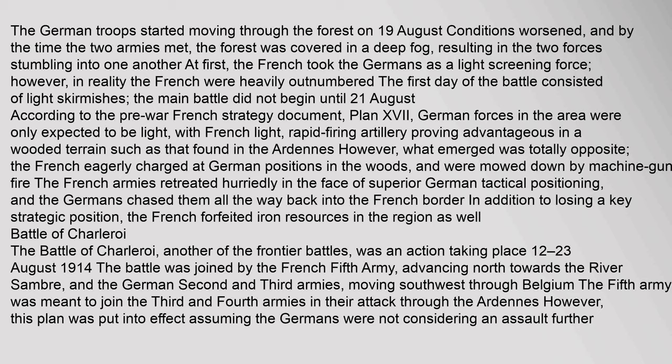General Pierre Ruffey's 3rd Army to the south and Fernand de L'Angle de Carrey's 4th Army to the north fought Germany's 4th Army, led by Duke Albrecht, and 5th Army, led by Crown Prince Wilhelm. The German troops started moving through the forest on 19 August. Conditions worsened and by the time the two armies met, the forest was covered in a deep fog, resulting in the two forces stumbling into one another. At first the French took the Germans as a light screening force, however in reality the French were heavily outnumbered. The French eagerly charged at German positions in the woods and were mowed down by machine gun fire. The French armies retreated hurriedly in the face of superior German tactical positioning, and the Germans chased them all the way back into the French border.